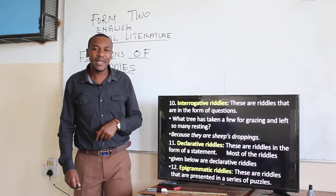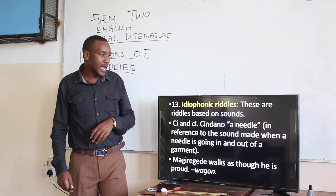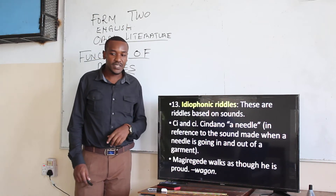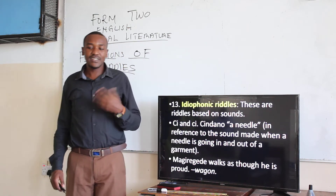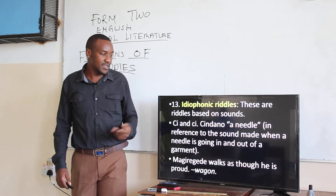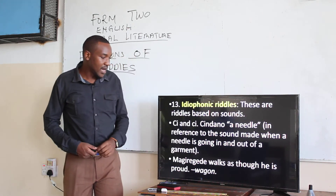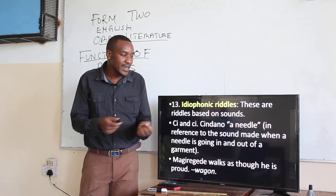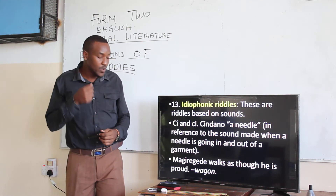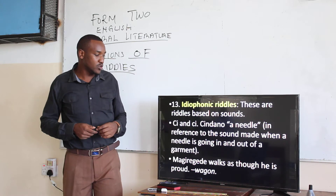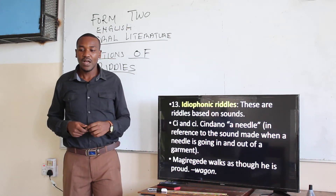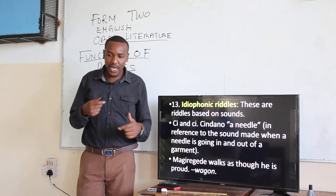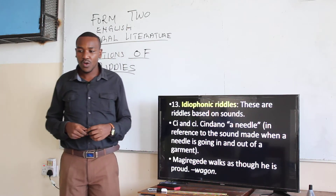Then we have riddles based on sound, called echoic riddles. These riddles are based on sounds. For example, 'C and C, Sindano' — Sindano means needle, referring to the sound made when the needle goes in and out of the garment. And 'Magregede, magregede' refers to the wagon or train, which makes that kind of noise.